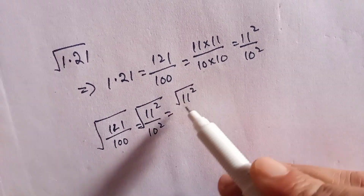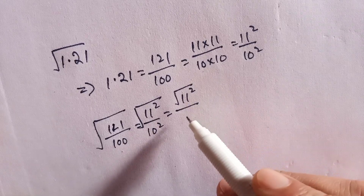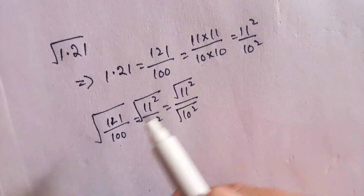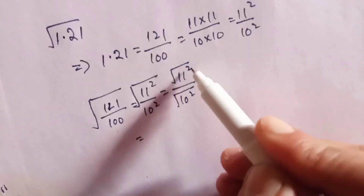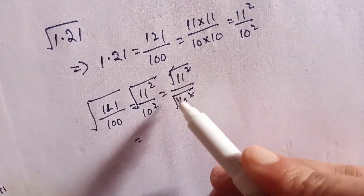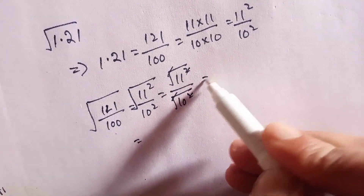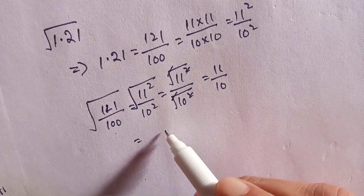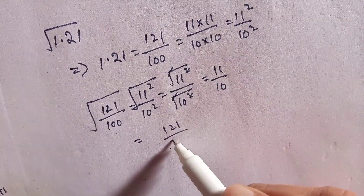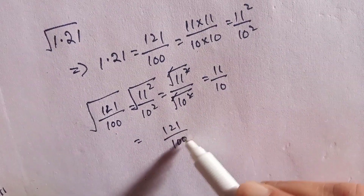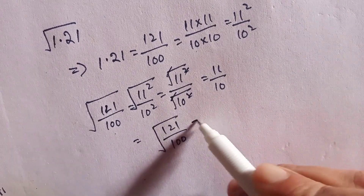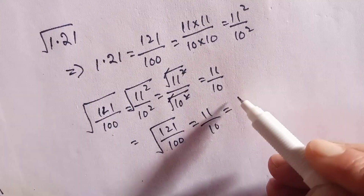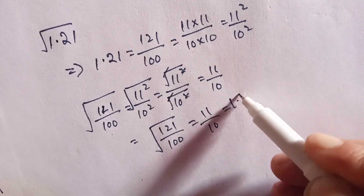We see that 11 squared can be written separately and 10 squared can be written separately under the square root. We cancel the square with the square root in both cases, which gives us 11 over 10. So the square root of 121 over 100 is equal to 11 over 10.